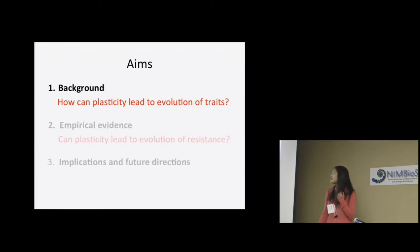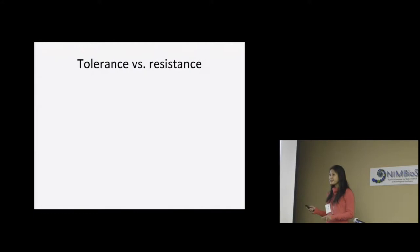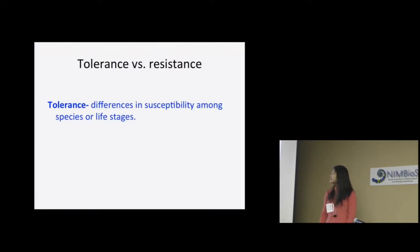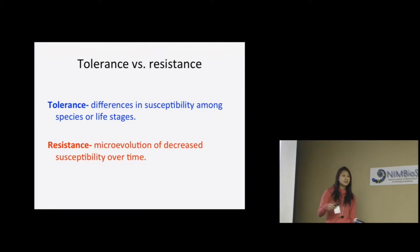To begin with the background, I need to define a couple of terms. Tolerance versus resistance — they're terms commonly used in my field. When I'm referring to tolerance, I mean differences in susceptibility among species or life stages; this is a relative measure. When I talk about resistance, I mean the microevolution of decreased susceptibility over time — this is a process.